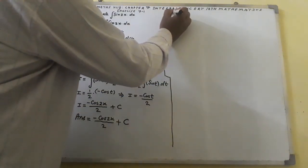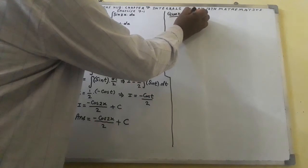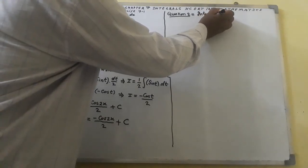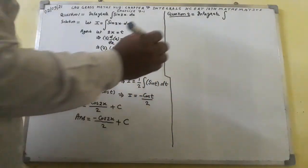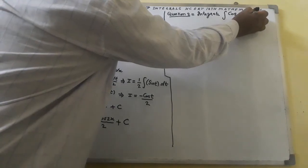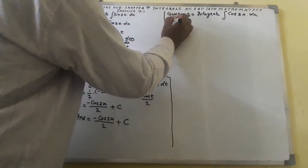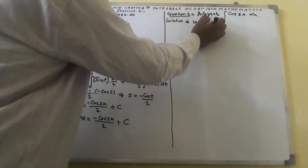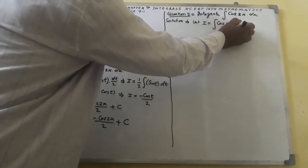Question number 2: I am going to solve integral cos(3x) dx. Solution: let I equal to integral cos(3x) dx.